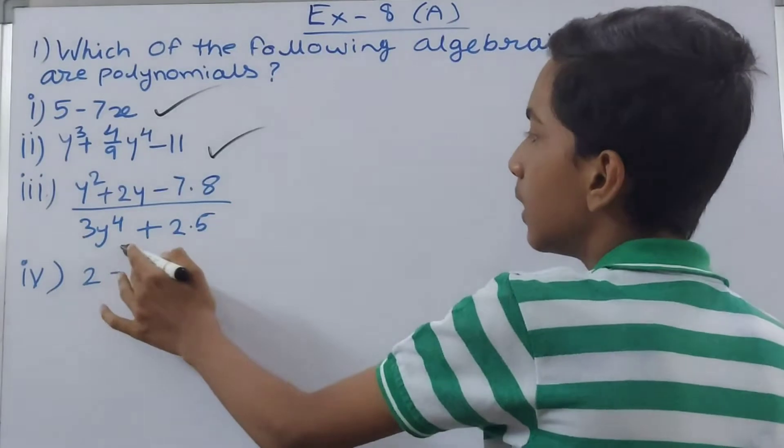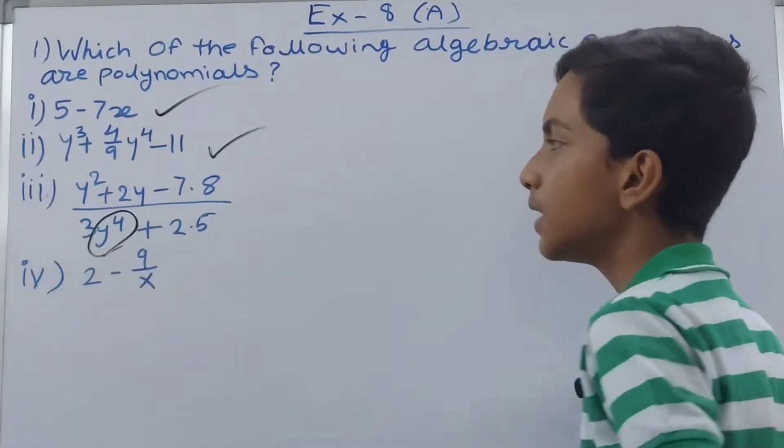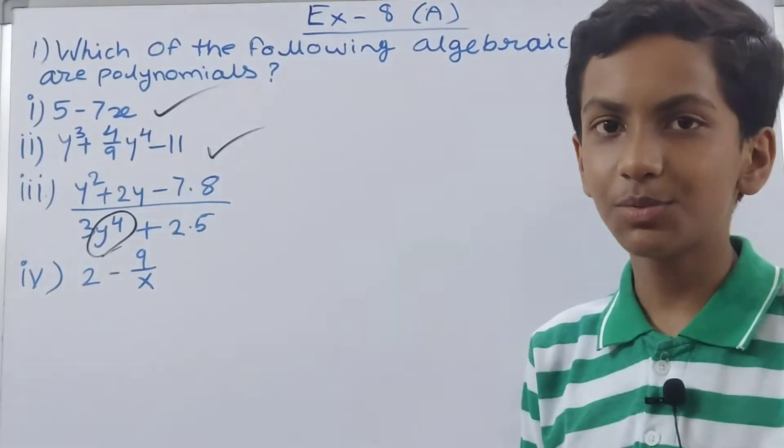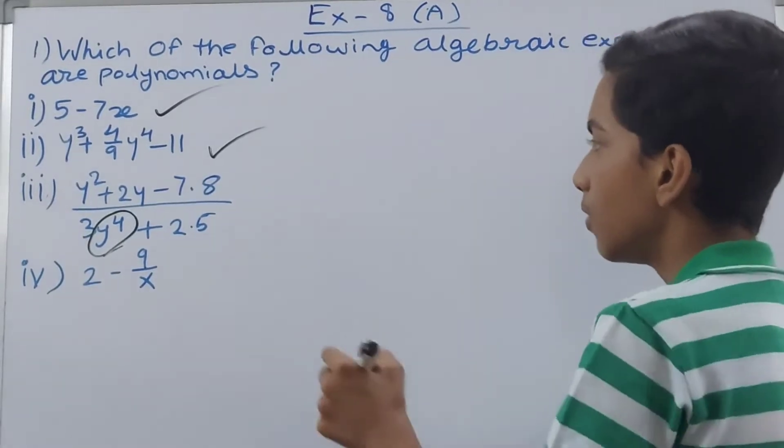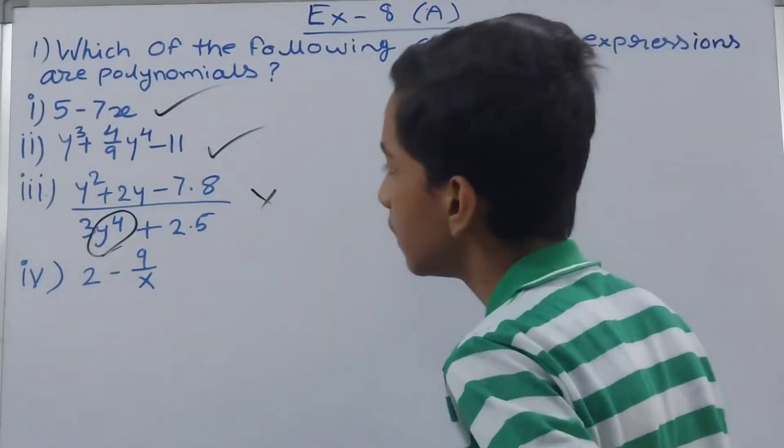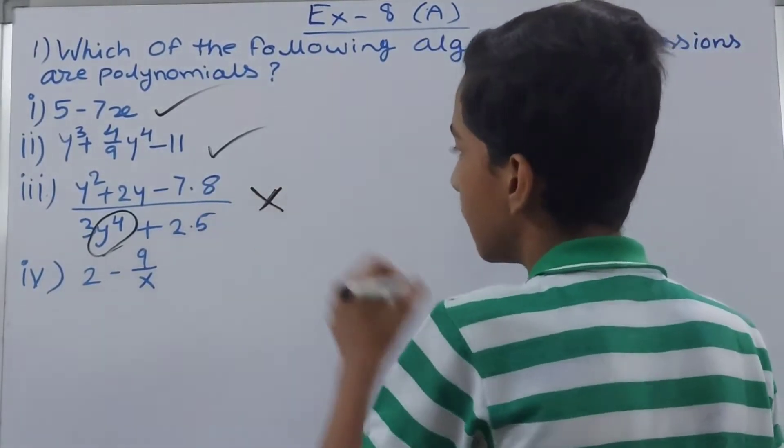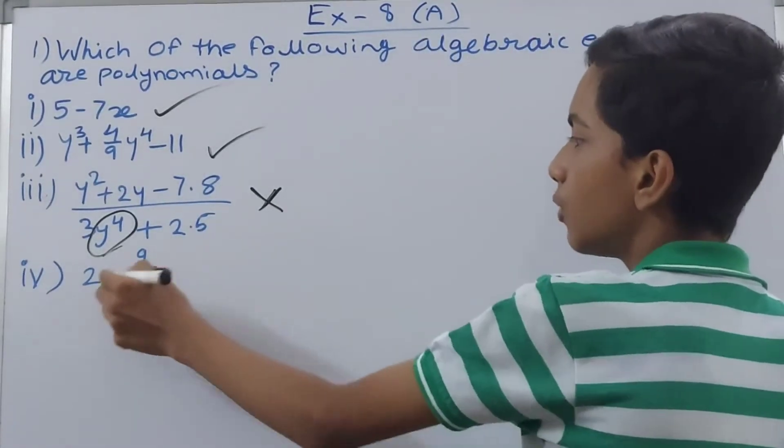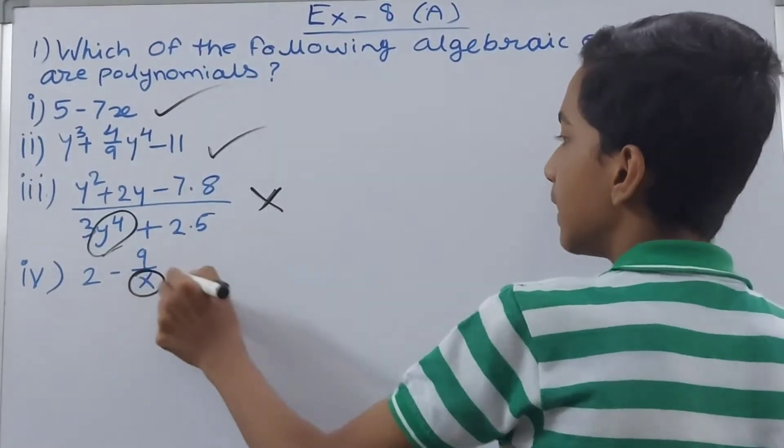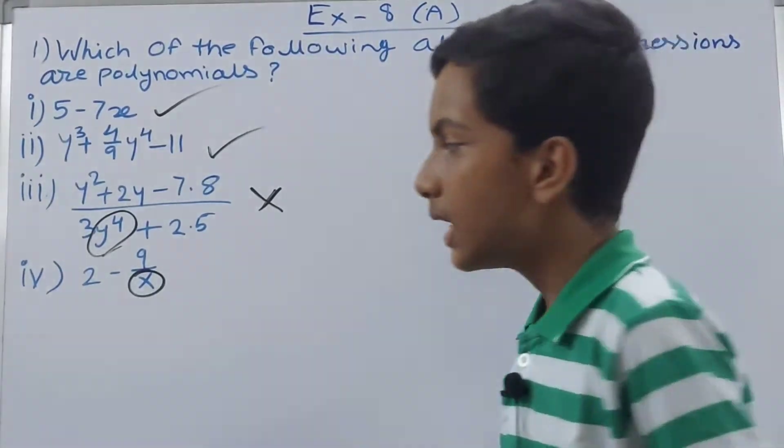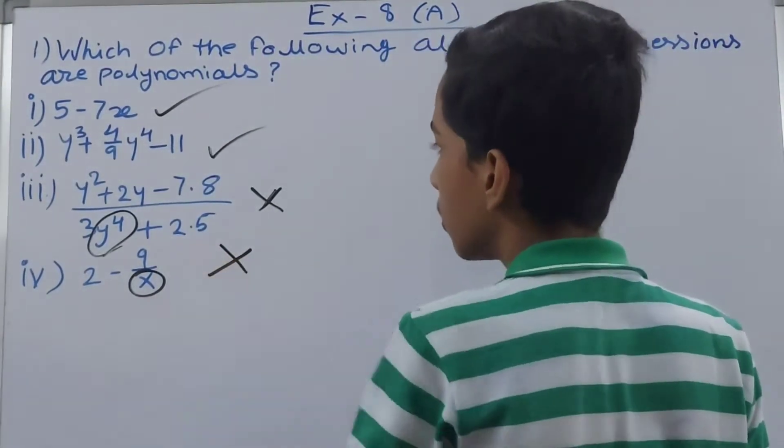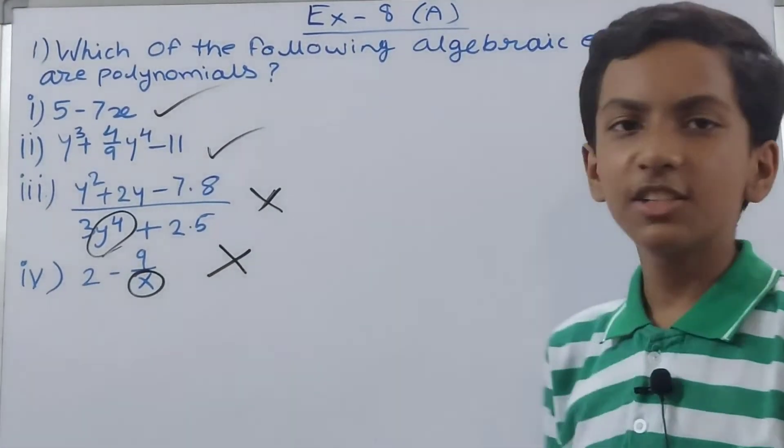Here we have 3y to the power 4. In this the variable is used in the denominator, which means that this is not a polynomial. Now this one as well, 2 minus 9 upon x, x here is used as a denominator which is wrong. This is also not a polynomial.